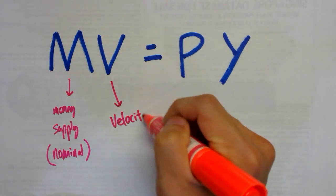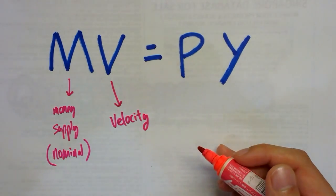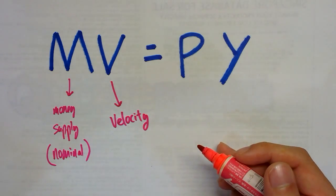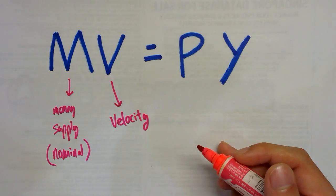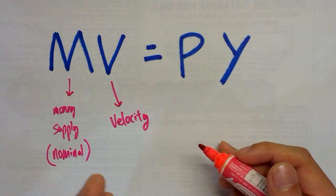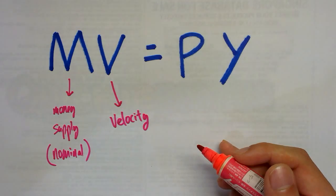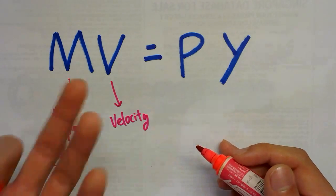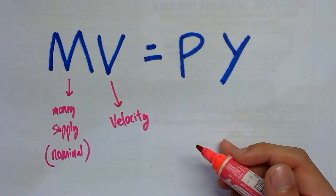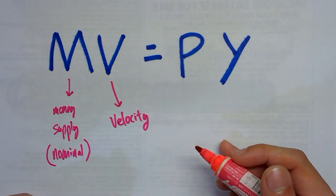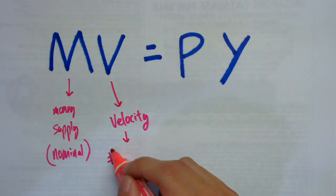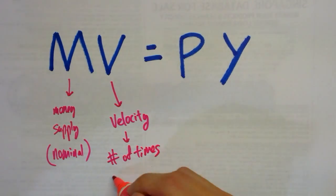V stands for velocity. Velocity is essentially the number of times money changes hands in an economy in one year. Let's say there are only two people — you and me. If I have five dollars and I use it to buy a coffee from you, and that's the only transaction done, then the velocity of money is simply one. In short, velocity is the number of times money changes hands.